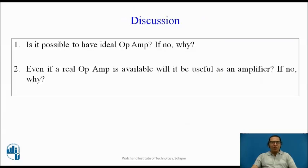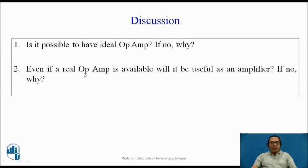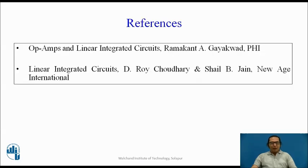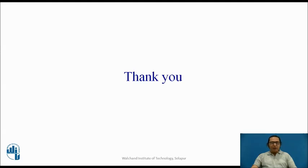With that, we come to the end of today's session. Points for discussion: first, is it possible to have an ideal Op-Amp, and if not, why? Second, even if a real Op-Amp with ideal characteristics were available, would it be useful as an amplifier? The clue is to remember the transfer characteristic of an Op-Amp. References for this session are Op-Amp and Linear Integrated Circuits by Ramakant Gayakwad, and Linear Integrated Circuits by Rai Choudhary and Shail Jain. Thank you, dear students, for listening.